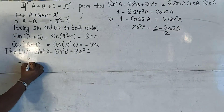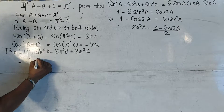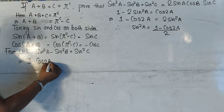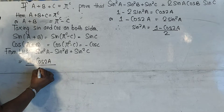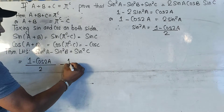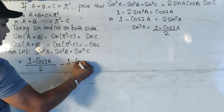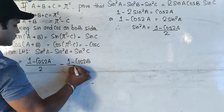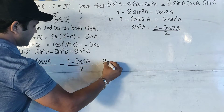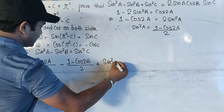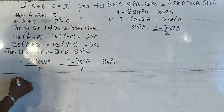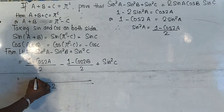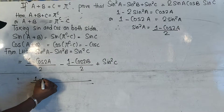So in place of sin²A we are going to write (1 - cos2A)/2. Similarly, sin²B will be written as (1 - cos2B)/2, and sin²C will be copied as it is. Now we will take the LCM of the first term.